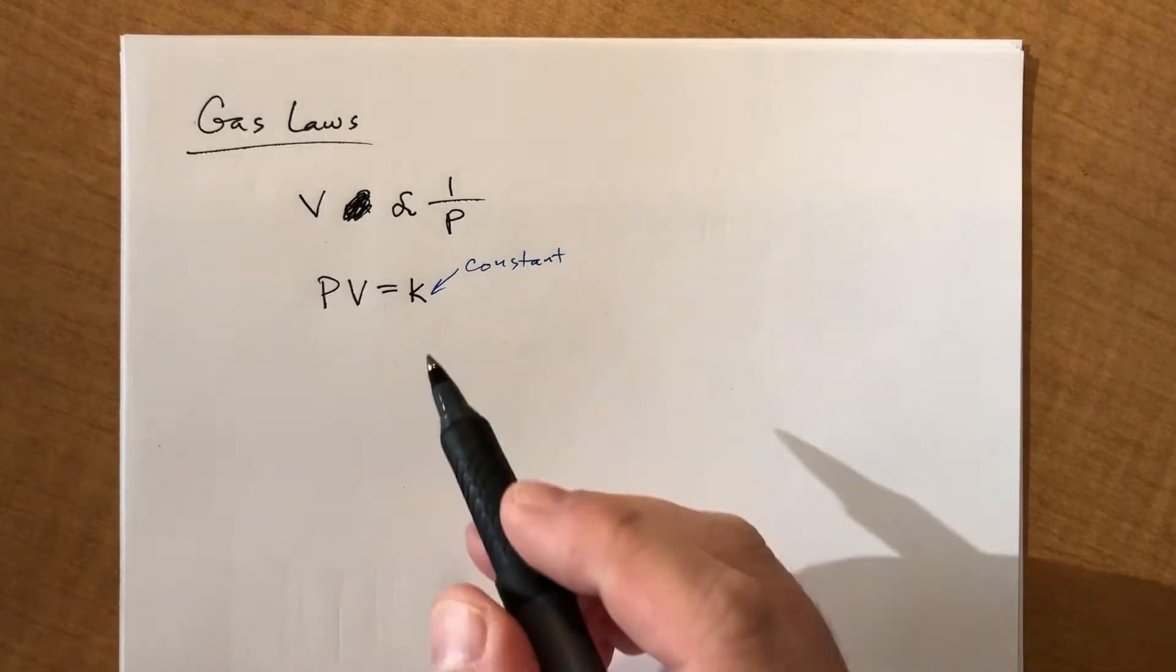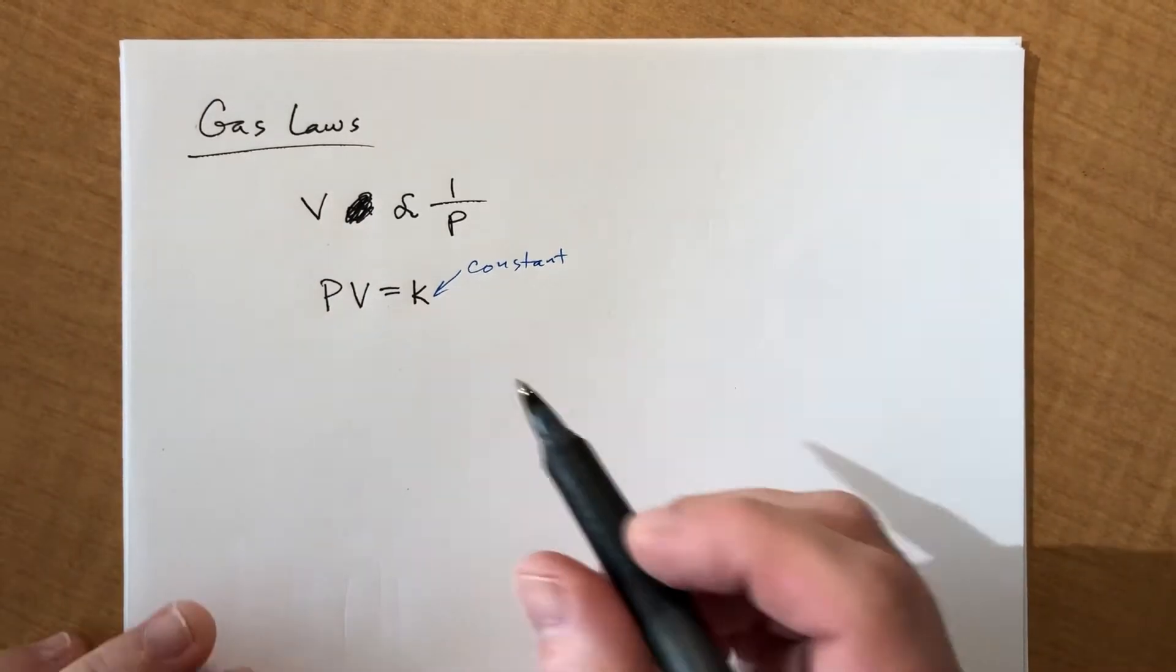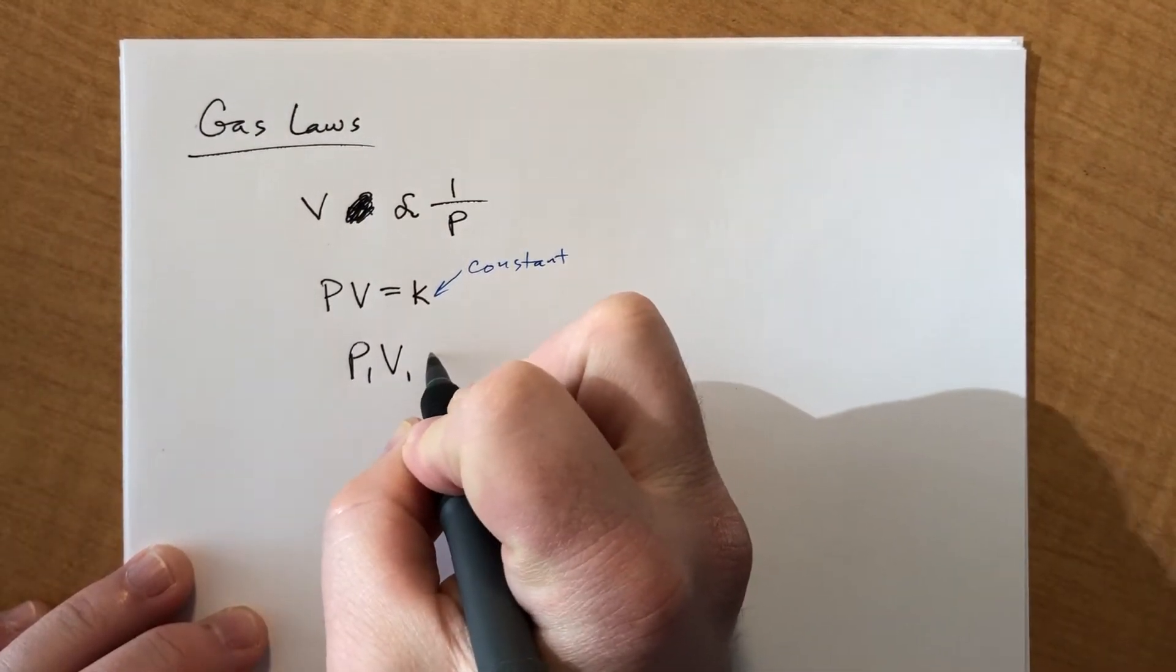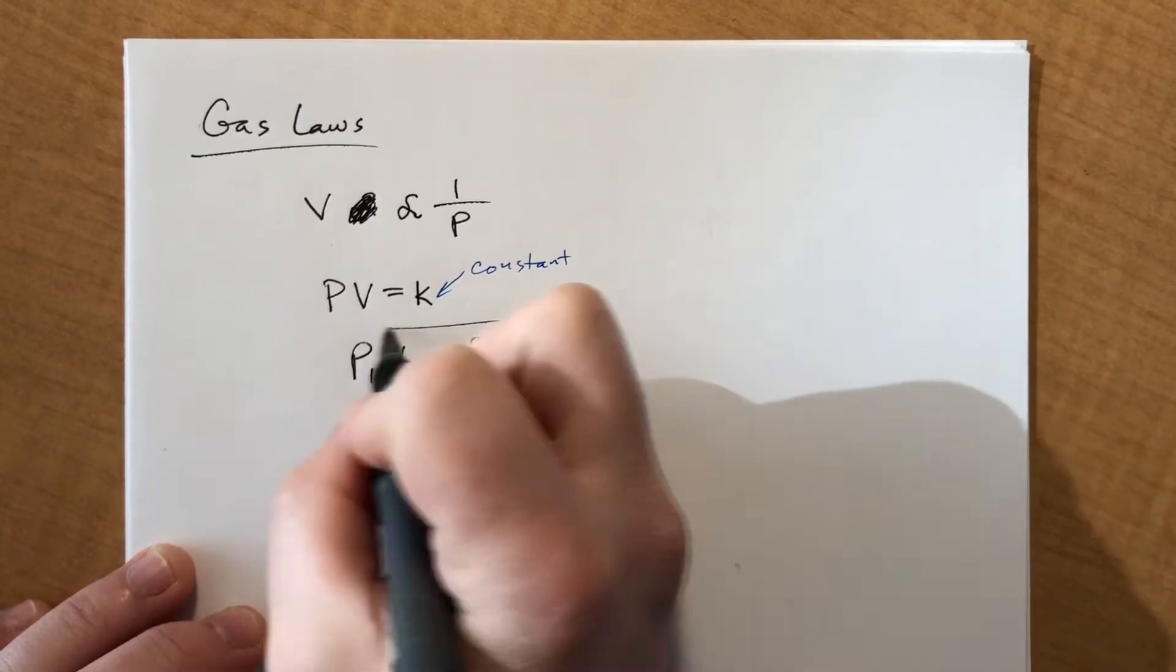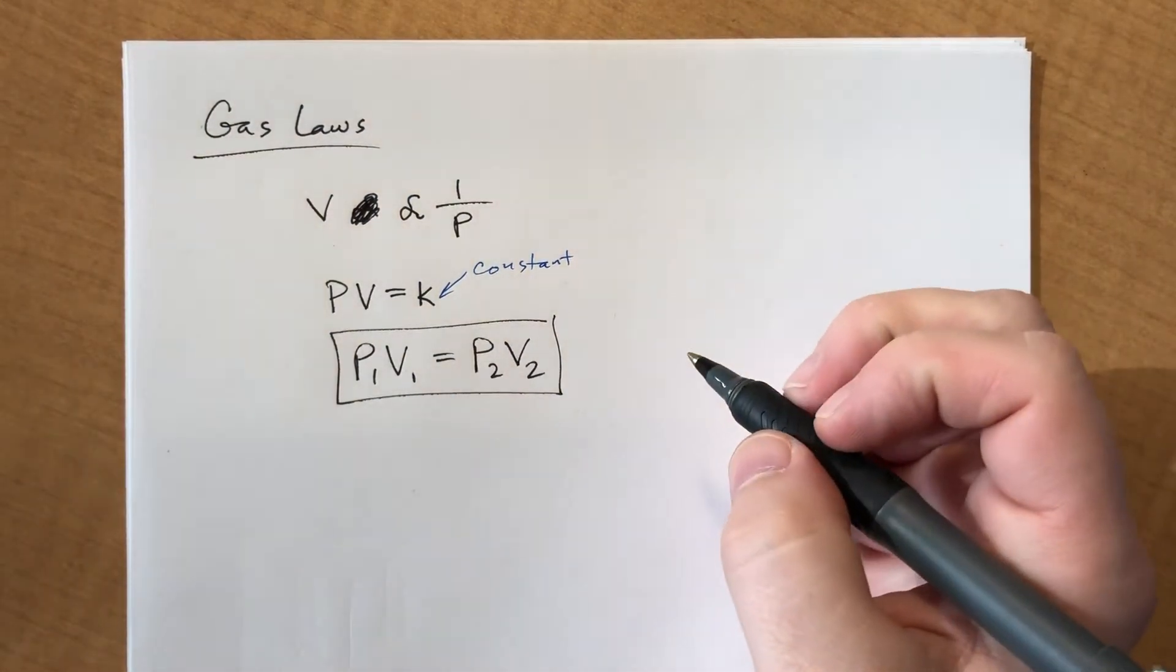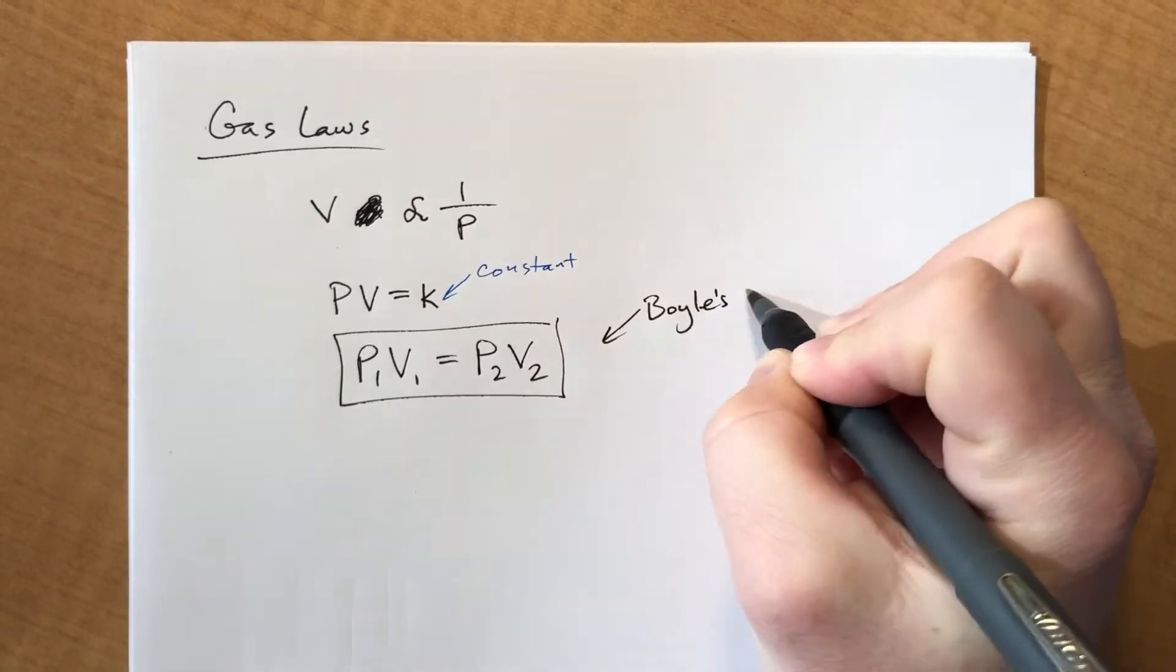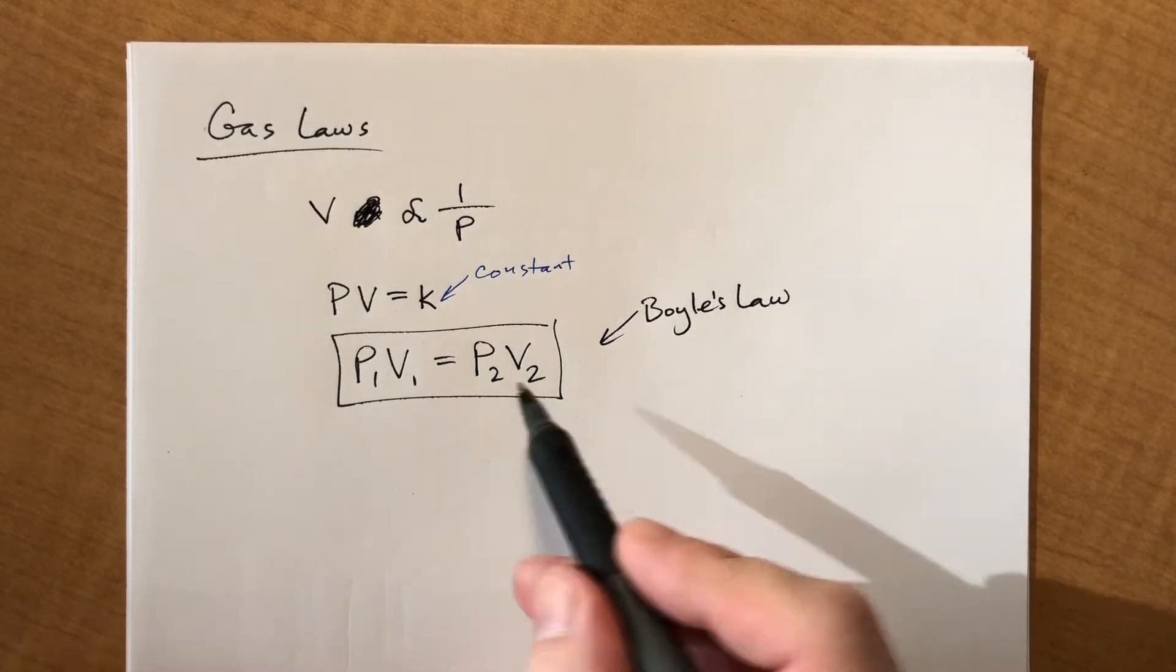For right now we don't actually care what that constant is. All that really matters is that if you have some initial conditions and then you change it, the pressure times the volume will both be equal to that constant. So if you have the initial conditions equal to a constant and then you change things and it's still equal to the same constant, then the initial and the final conditions are equal to each other. I don't care if you learn this, but this is called Boyle's Law.